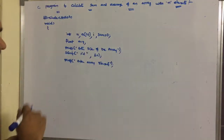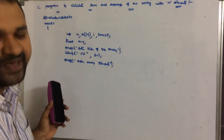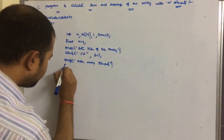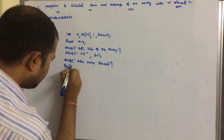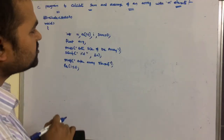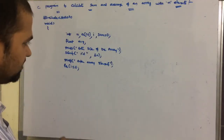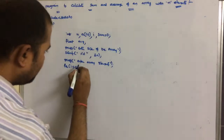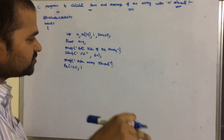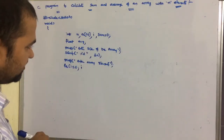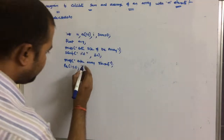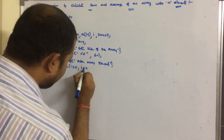Since we are reading more than one element, a for loop is compulsory. The index of an array starts from 0, so we write: for(i = 0; i <= n-1; i++). Note that i <= n-1 can also be written as i < n.